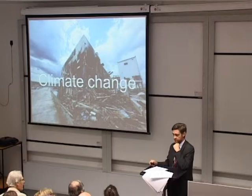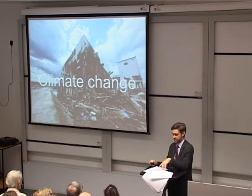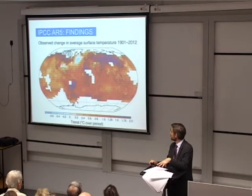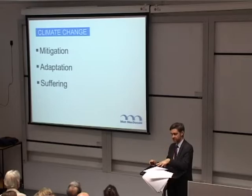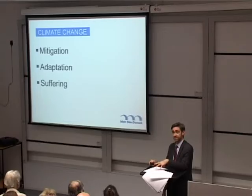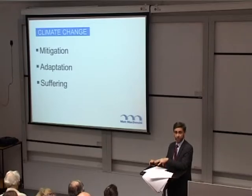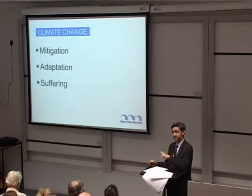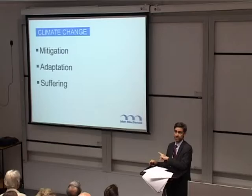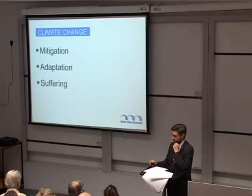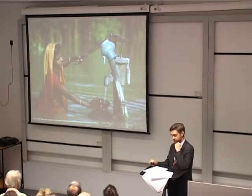Ralph Ciccerone, a one-time US National Academy president, described three possible responses to climate change as mitigation, adaptation and suffering. There's a real possibility that humanity has just about given up on mitigation. Adaptation is fine for the rich — the rich are doing this for themselves. And that really leaves the only other option for the poor: suffering.